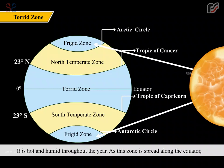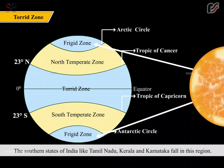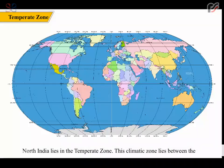As the torrid zone is spread along the equator, the sun rays fall directly on it, making the area extremely hot. The southern states of India like Tamil Nadu, Kerala and Karnataka fall in this region. North India lies in the temperate zone.